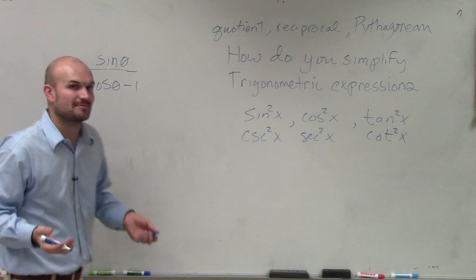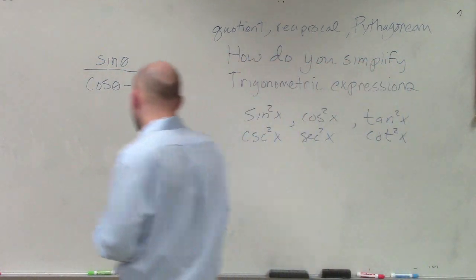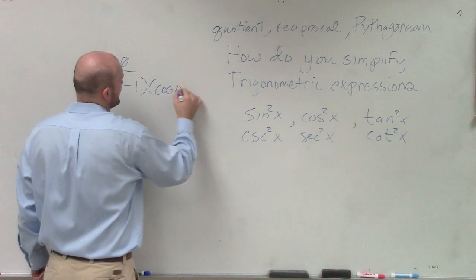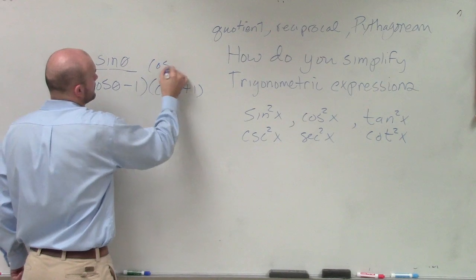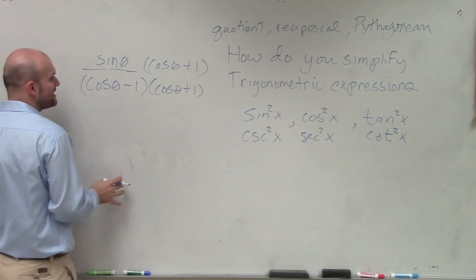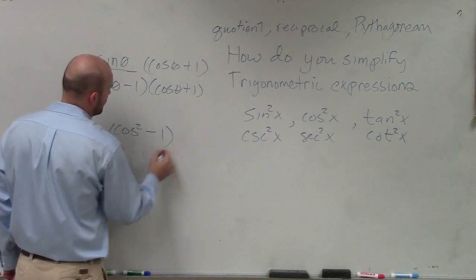But right now there's really nothing I can do to kind of simplify that. However, if I go ahead and multiply my denominator by cosine of theta plus 1, now what I've created in my denominator is cosine squared minus 1.